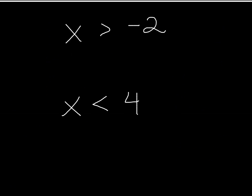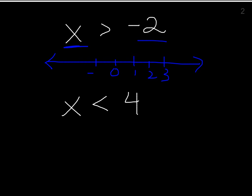Now we're going to graph x is greater than negative 2. We want to show all the numbers, represented by x, that are greater than negative 2 — not or equal to. The first thing we're going to do is draw the number line, put 0 in the middle, and go a few numbers in each direction. You have to decide: do you use an open circle or a closed circle?